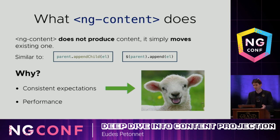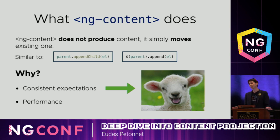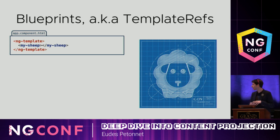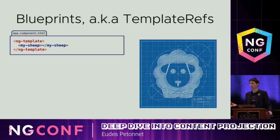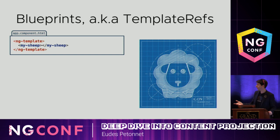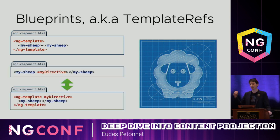Breeding sheep is a valid use case — I tried ng-for and nothing works. What can I do? We're all engineers, so we know that the only thing you need to breed sheep are blueprints. In Angular, blueprints are called template refs. A template ref is basically wrapping something in an ng-template, and that something becomes a blueprint you can reproduce as many times as you want. You might be more familiar with the structural directive star syntax, which is just syntactic sugar for wrapping whatever it's on inside of an ng-template — the two forms are completely equivalent.